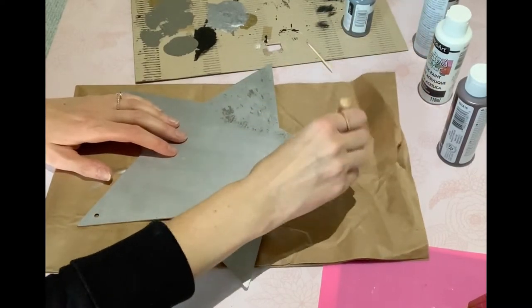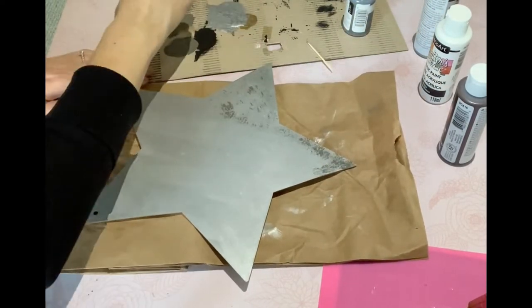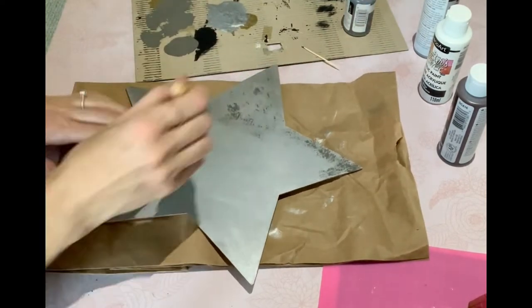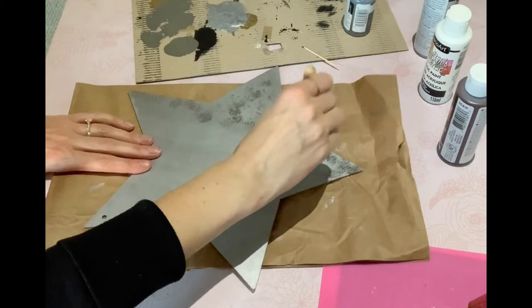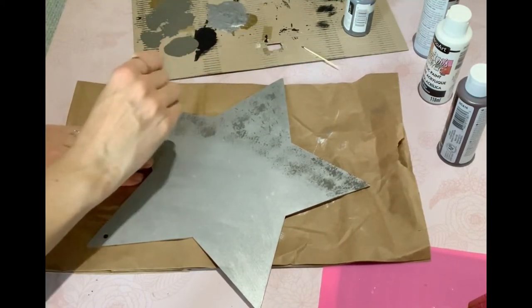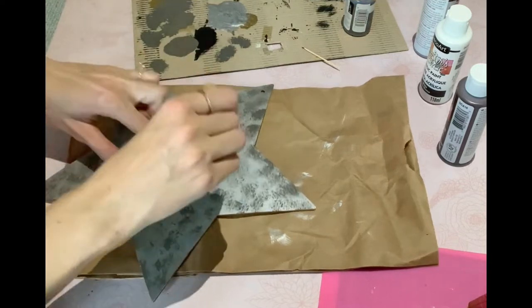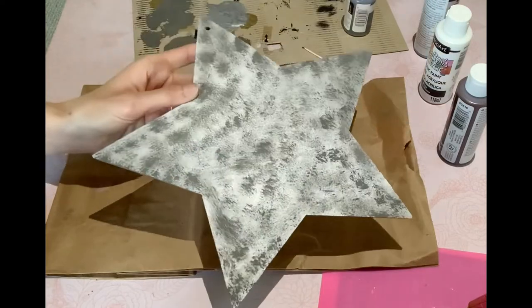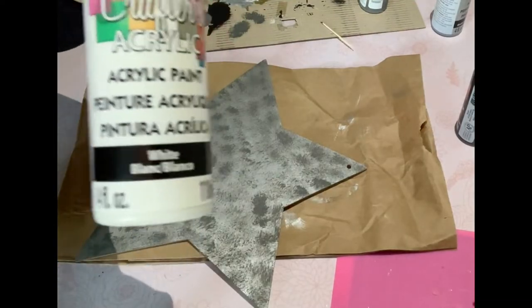I'm going all over the top of the silver, and that just helps matte it out so it's not as shiny. Once that's dry, you can move on to the next step.